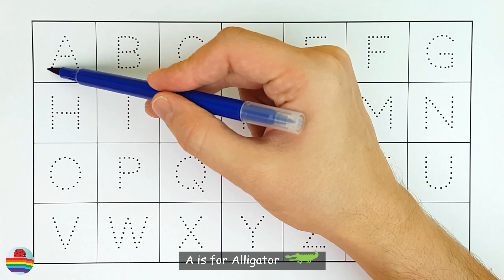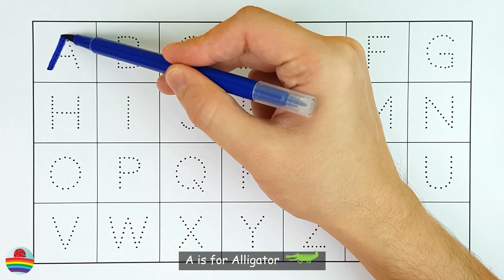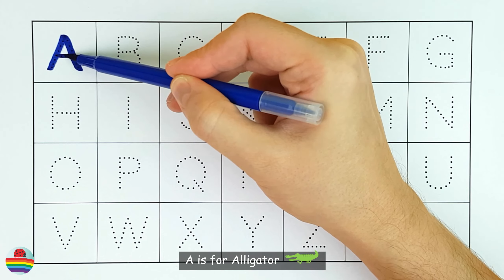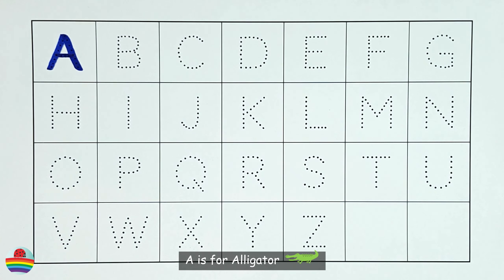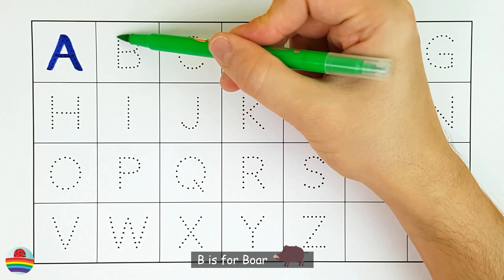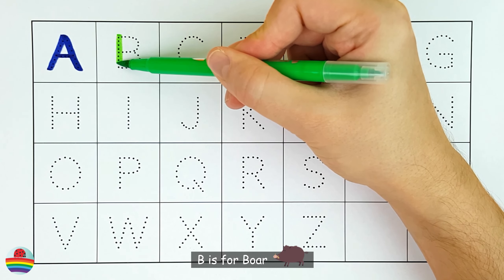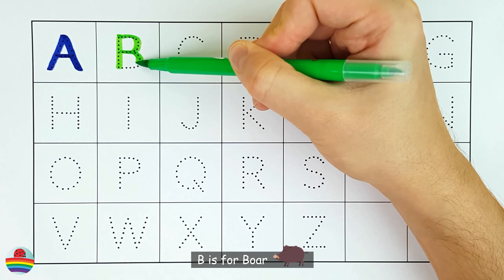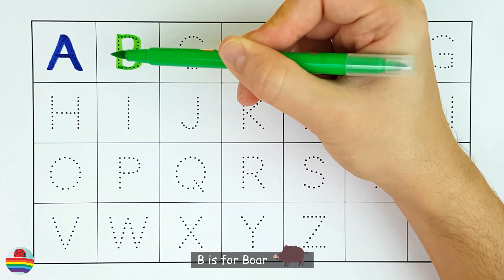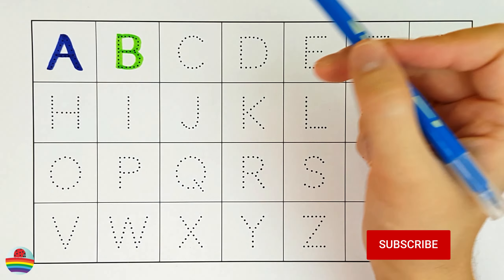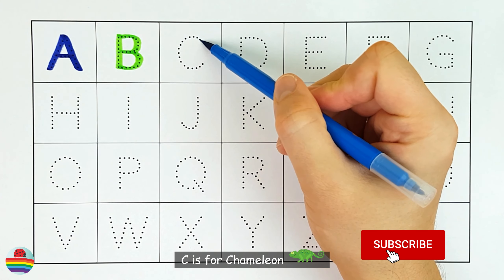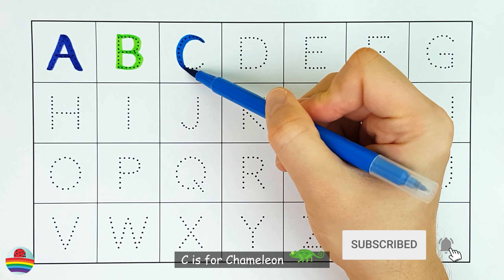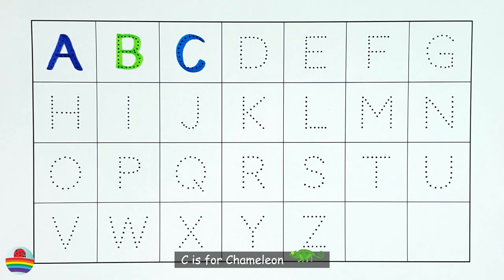A. A is for alligator. B. B is for boar. C. C is for chameleon.